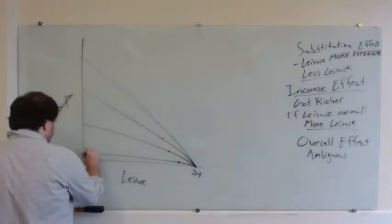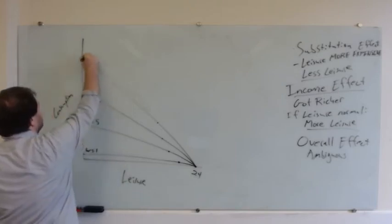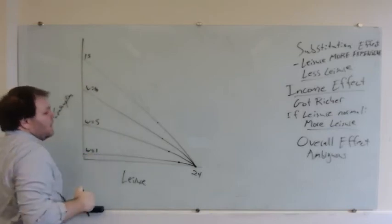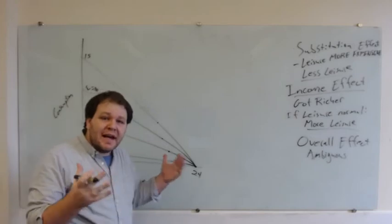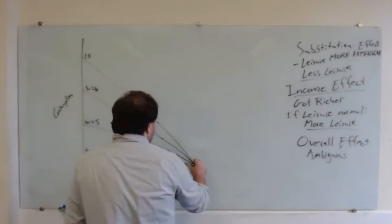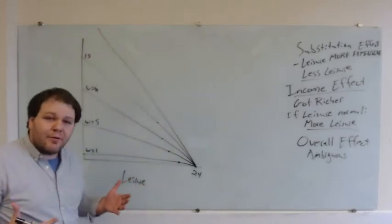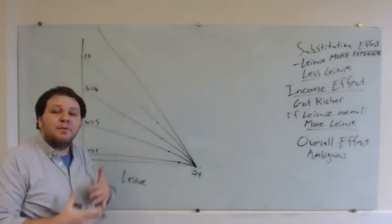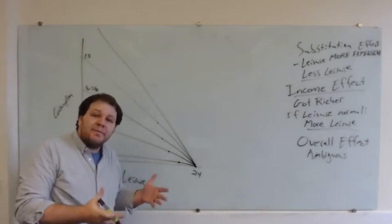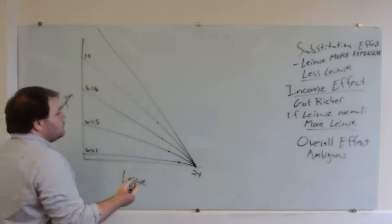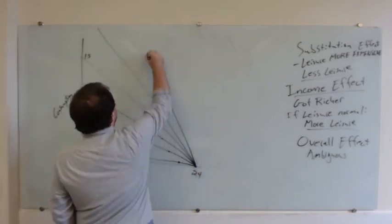So let's say at wage equals 1, 5, 10, 15 and higher, as your income gets higher and higher, additional increases in wage are going to have larger and larger positive income effects — as the remaining leisure becomes more and more strongly a normal good. And the substitution effects are likely to get smaller and smaller, because you're no longer doing things with your leisure time that you can easily spend money on.